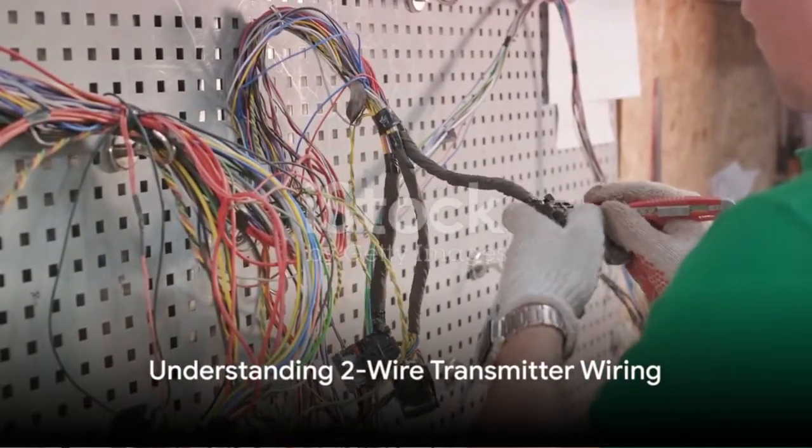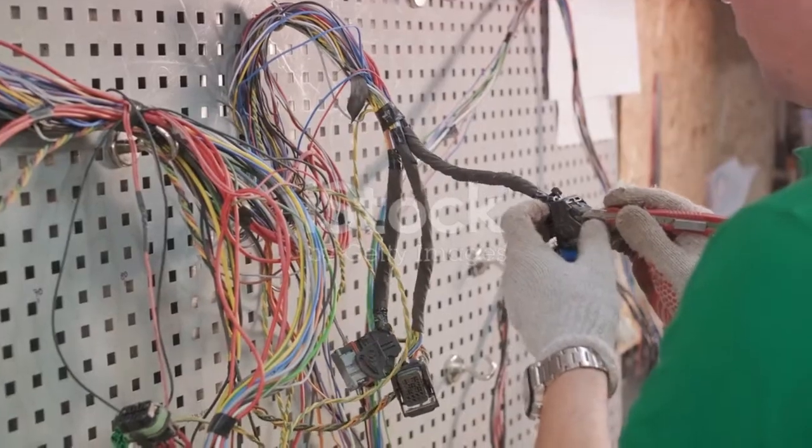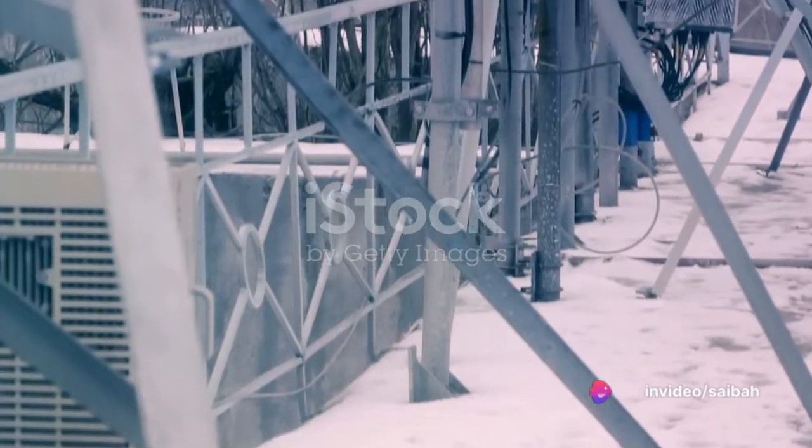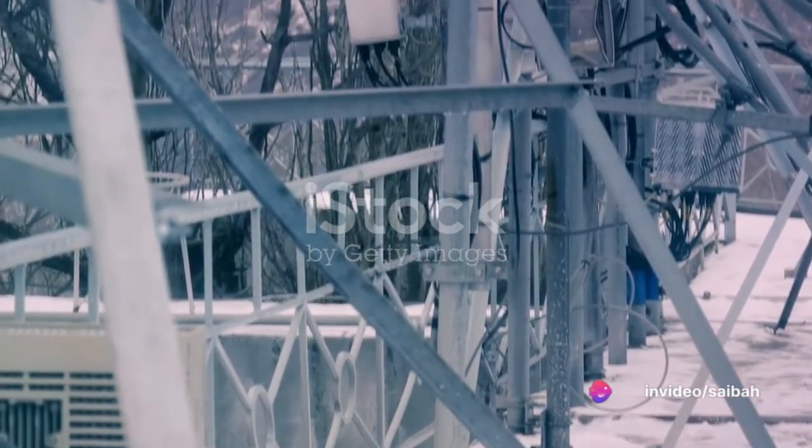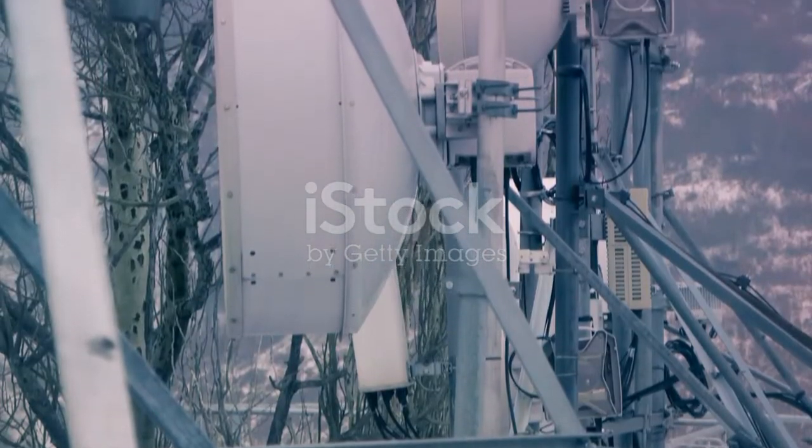Let's begin with the 2-wire transmitter wiring. It's one of the simplest types of transmitter wiring and is commonly used in many industries. The 2-wire transmitter wiring system works by powering the transmitter and receiving the signal simultaneously through the same 2 wires, hence the name.